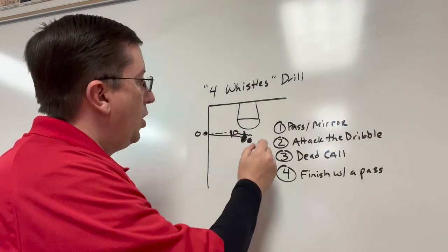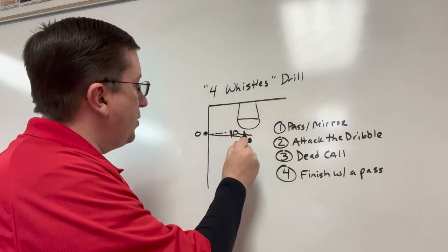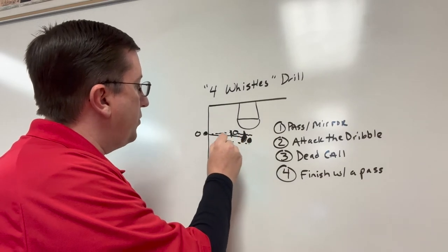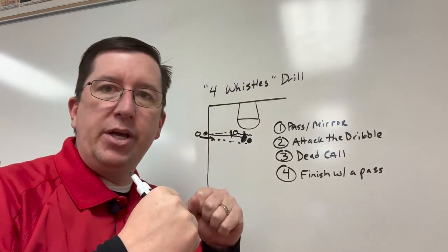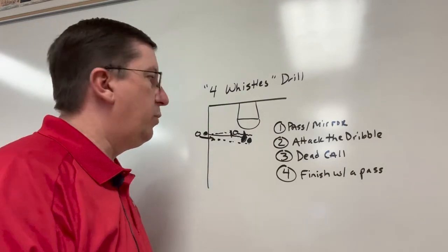And then on the fourth whistle, we're going to finish with a pass to the next person in line without traveling. What we really emphasize to this player is to step to the pass. Chin that ball, put it on their chin, and then we go from there.